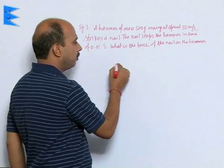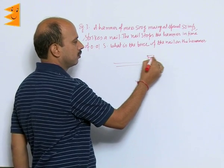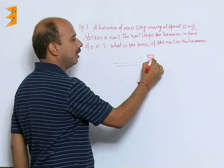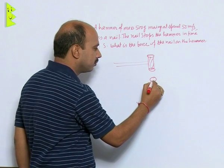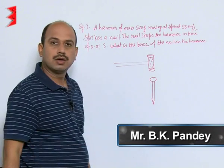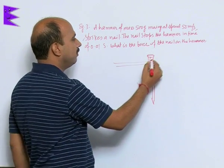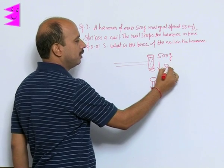See here, suppose you have taken your hammer like this, this is a hammer here, here you have taken a nail, its mass is given to you 500 grams and speed is 50 meter per second.